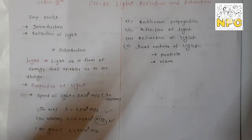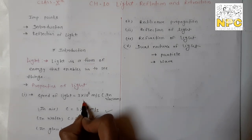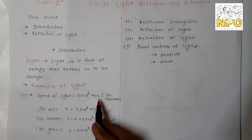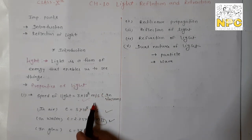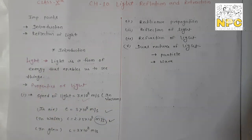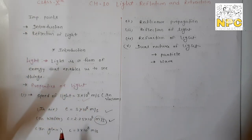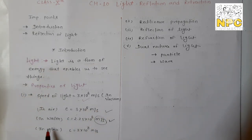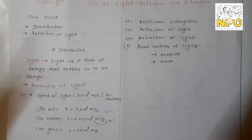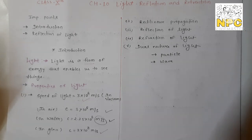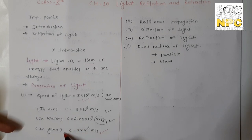The speed of light is about 3 × 10⁸ meters per second, where meters per second is the unit of velocity. This applies in vacuum, free space, or air. In water, the speed is about 2.25 × 10⁸ meters per second, and in glass it is about 2 × 10⁸ meters per second. So if we change the medium, the velocity changes because of the density of the medium.